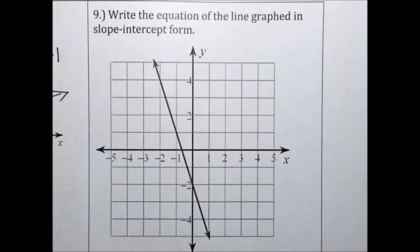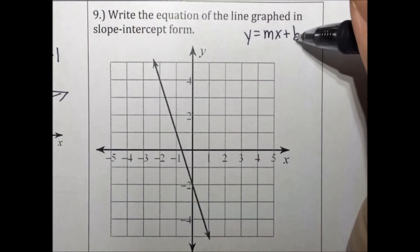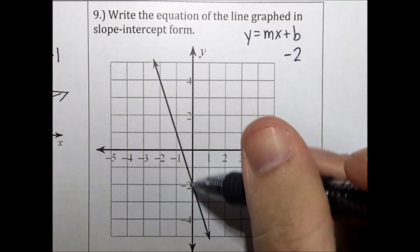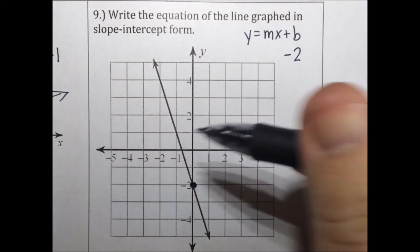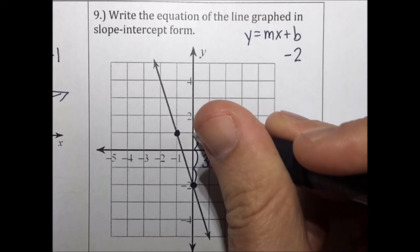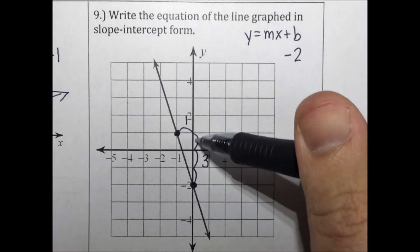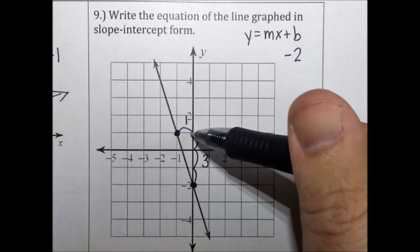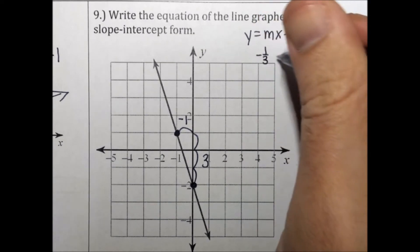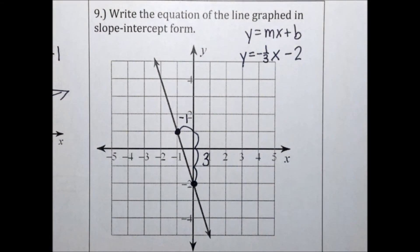Write the equation of the line graphed in slope-intercept form. Slope-intercept form is y equals mx plus b. The y-intercept is negative 2. For the slope, rise over run — using another point, we rise 3 and run 1. The line goes downhill from left to right; I rose 3 up (positive) but went left (negative), so the slope is negative 1 third. Our equation is y equals negative 1 third x minus 2.